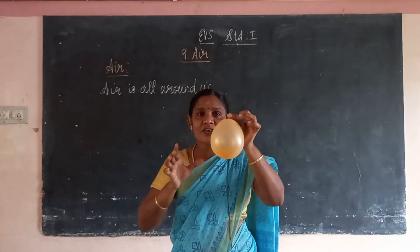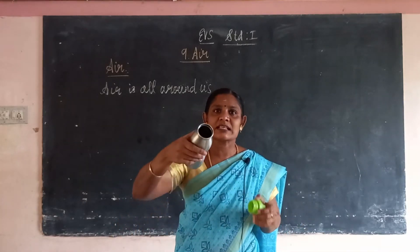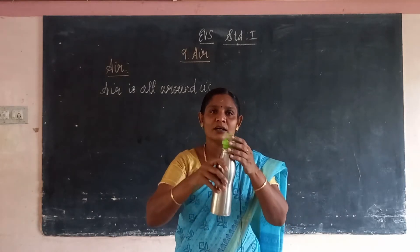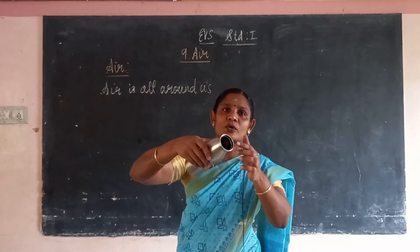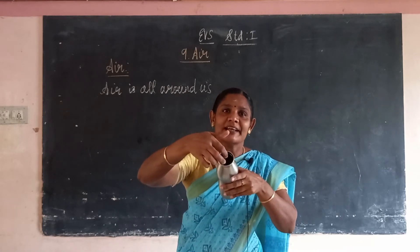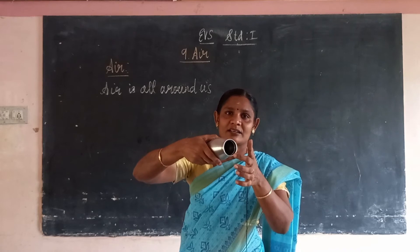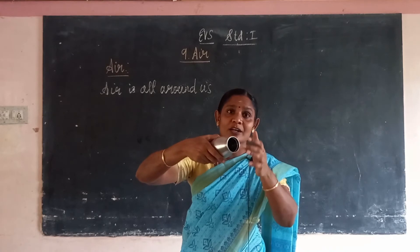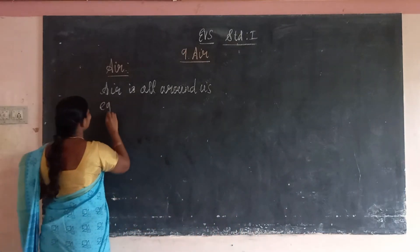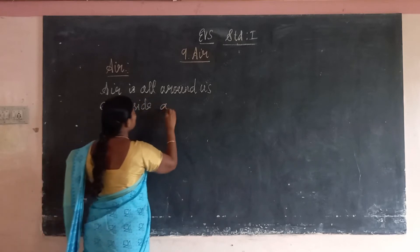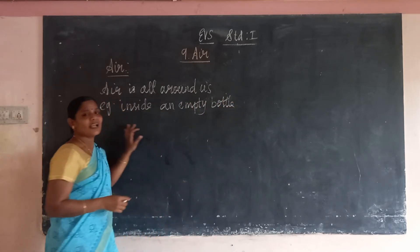This is the air. This is the inflated balloon. You have to see here. This is a bottle — an empty bottle. Inside the empty bottle, there is air. This is the example of the air.